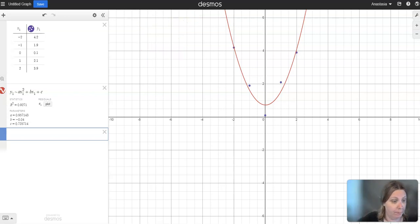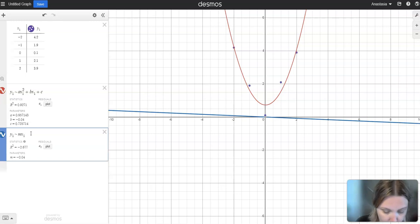So let me demonstrate. Y underscore 1, MX1 plus B.